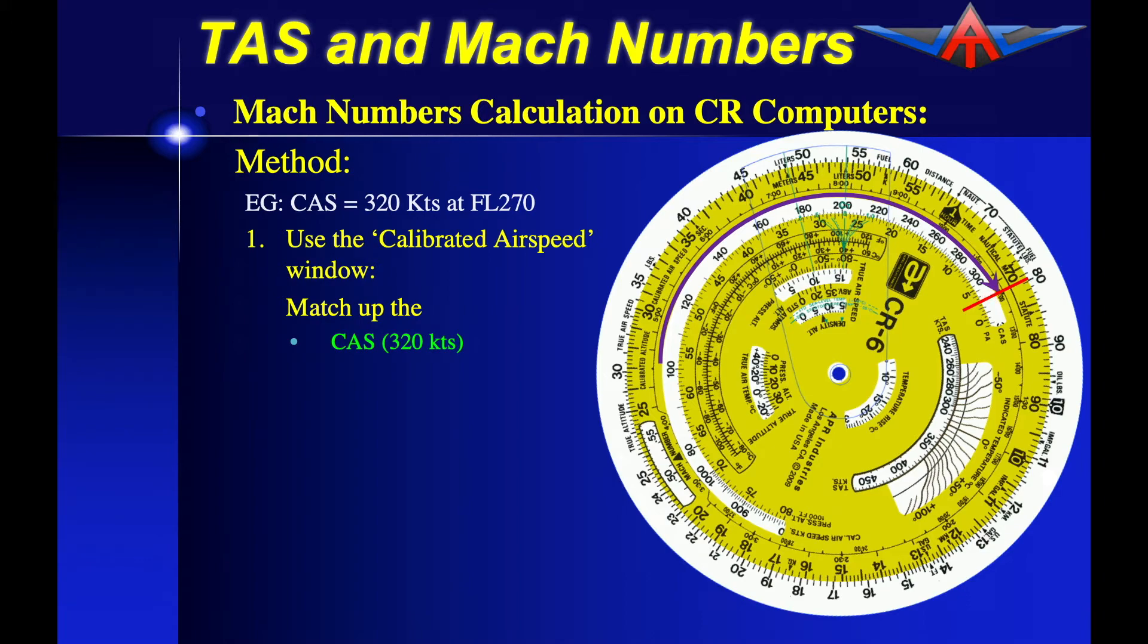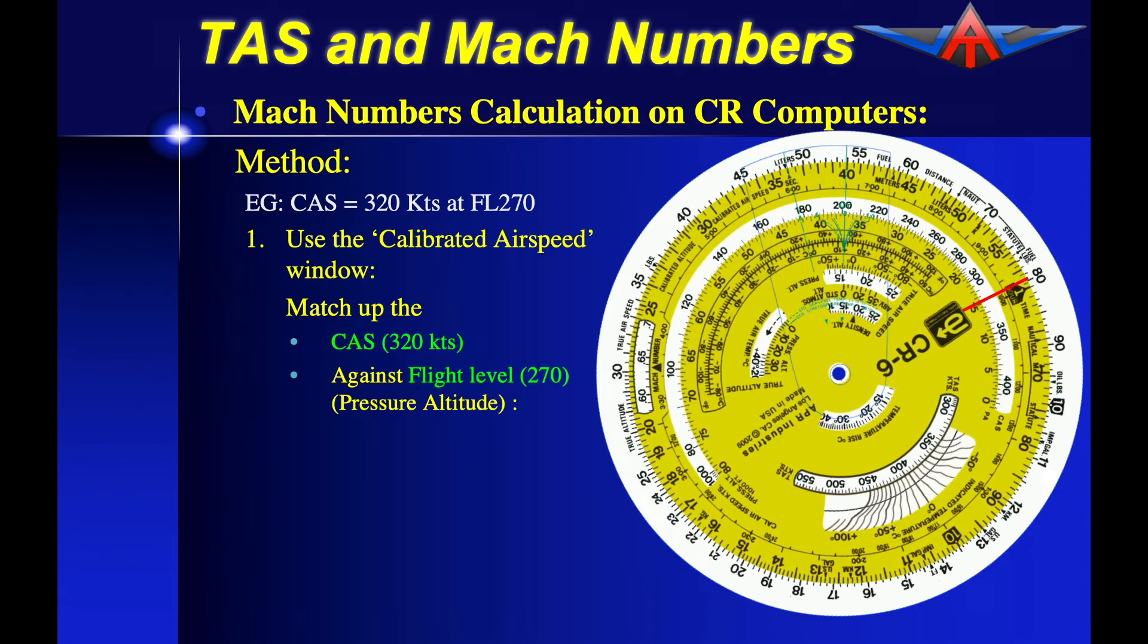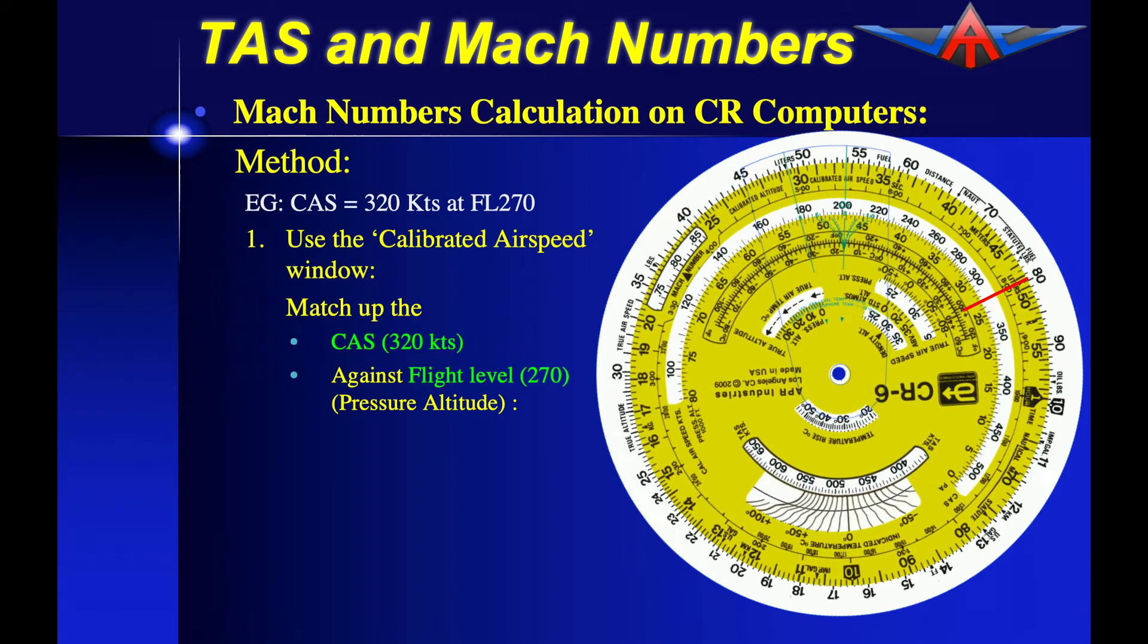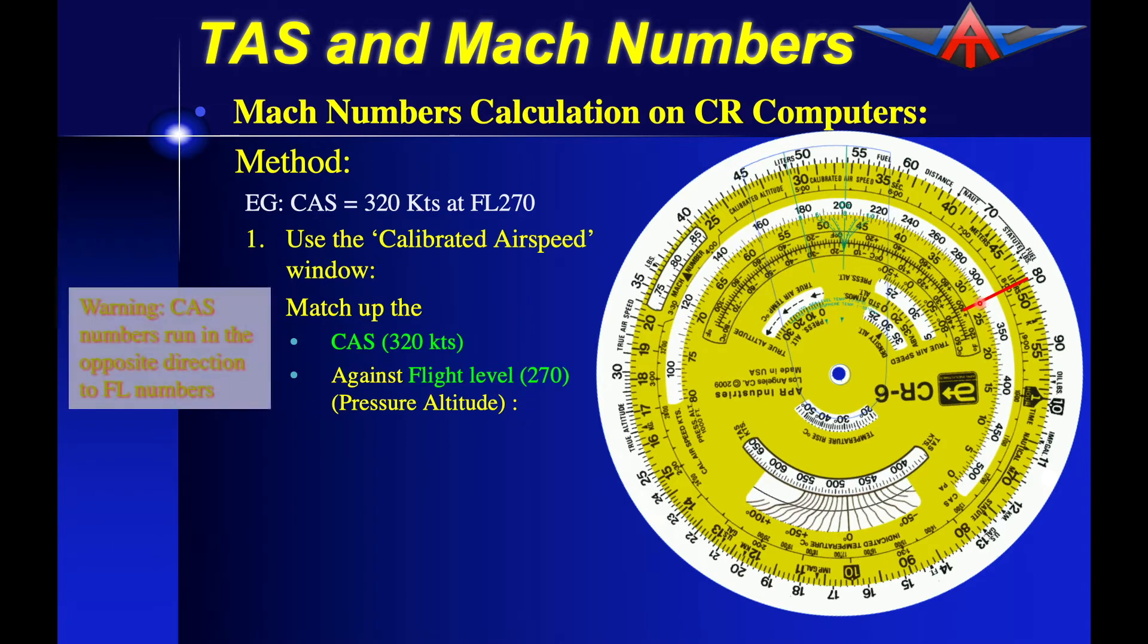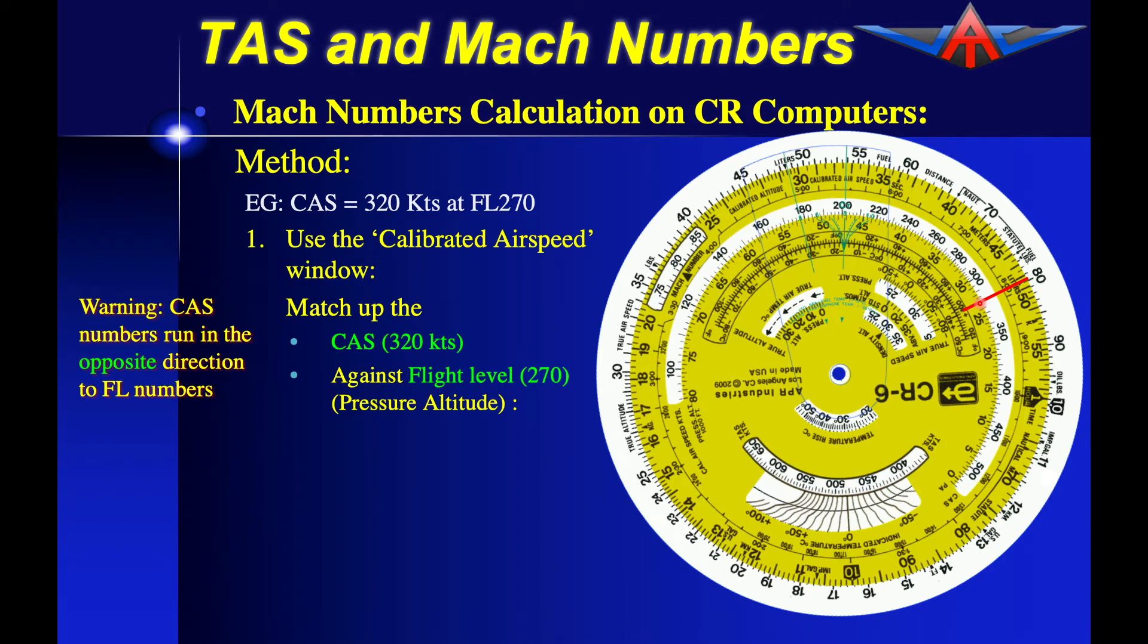We're going to match that calibrated airspeed up with the pressure altitude or the flight level. Now the flight level numbers we need to note are coming here in the yellow and are going in the opposite direction. So what I've done is matched up the 320 knots with the flight level 270. It is absolutely vital that you remember that the numbers are going in opposite directions. Otherwise you are going to get significant errors in this calculation.